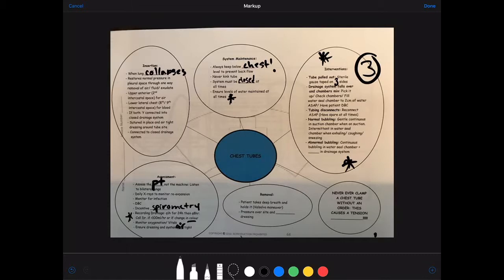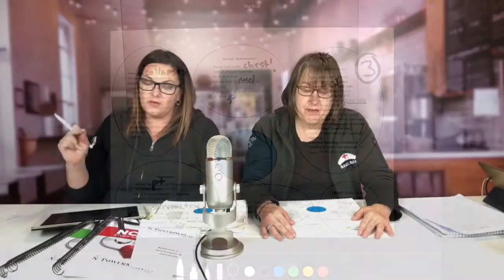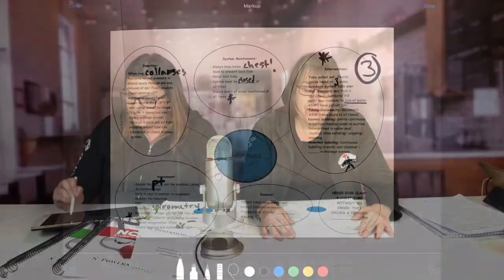If the drainage system falls over and the chambers mix together, pick it up—that's what you would do. Check those chambers and fill the water seal chamber to two centimeters of water. Last week when we talked about the different parts of the drainage system, we discussed how that two centimeters of water in the water seal chamber is the most important chamber because it prevents backflow into the pleural space, and have the patient deep breathing cough. If the tubing disconnects, reconnect that tubing as soon as possible. You should have a spare at all times.